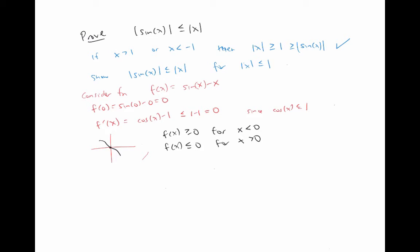So let's consider the case where x is positive and less than one first. And then we'll consider the case where x is negative and bigger than negative one next, since we've already taken care of x values that are large in magnitude, so we don't have to worry about that.